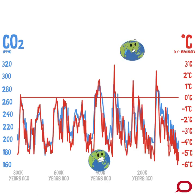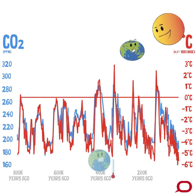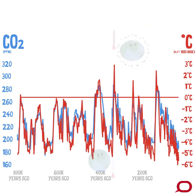Slow changes in the Earth's orbit around the sun initiated the ice ages. CO2 was a natural amplifier, causing the global climate to warm and cool through each cycle.